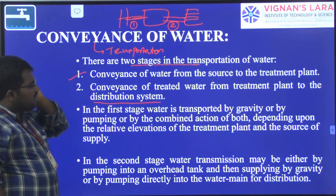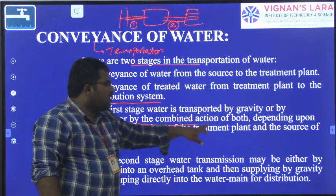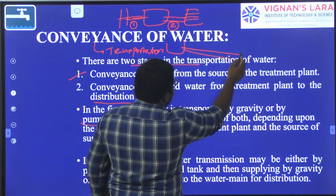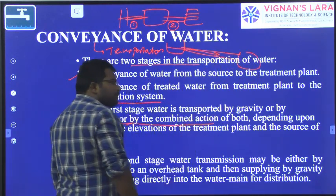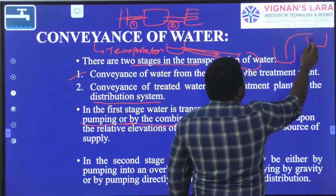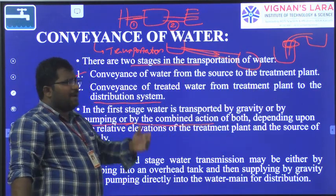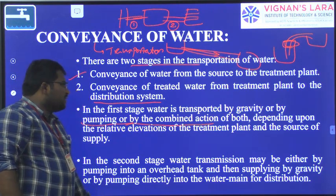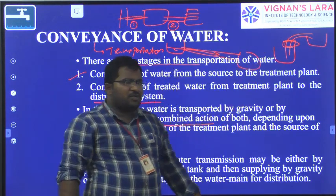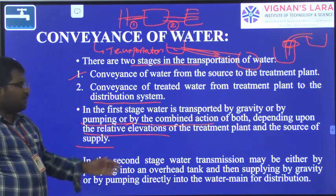In the first stage, water is transported by gravity, or it may be done by pumping, or by a combination of both gravity and pumping. Gravity means the source is at a higher elevation and the town or plant is at a lower elevation, so water flows with the help of gravity. In some cases, the water source will be at a lower point and the town or plant will be at a higher location, so we use a pump system. The method depends upon the relative elevation of the treatment plant and the source of supply.